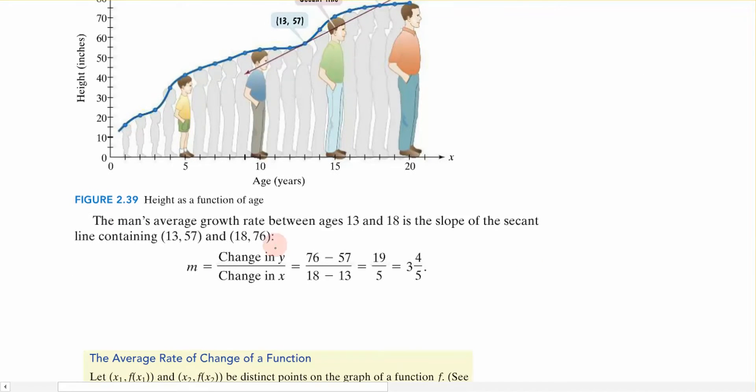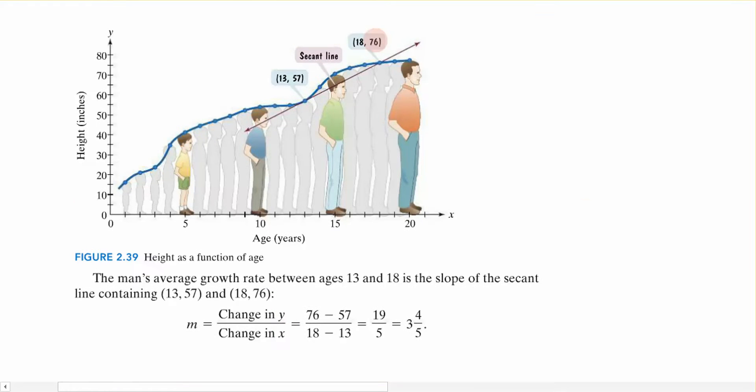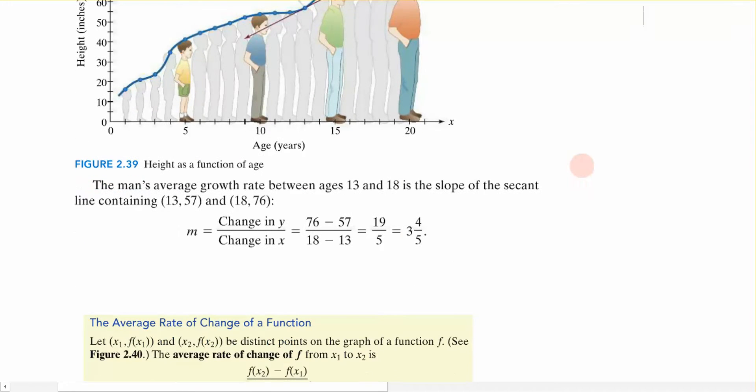And we know slope is the change in the y's over the x's, so we simply took the difference in the y's, divided it by the difference in the x's, and you can see that we end up with this value, 3 and 4 fifths, or 3.8. So on average, I would say that the average growth rate is 3.8 inches per year for a male.